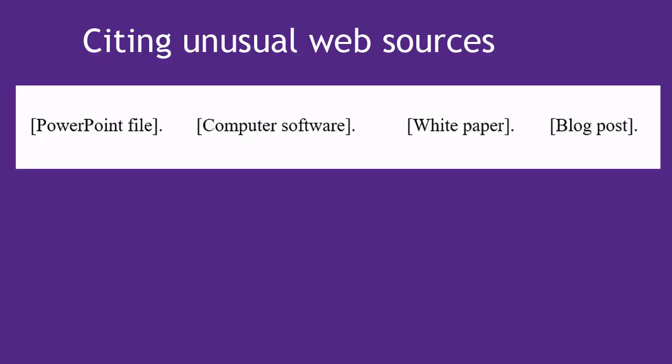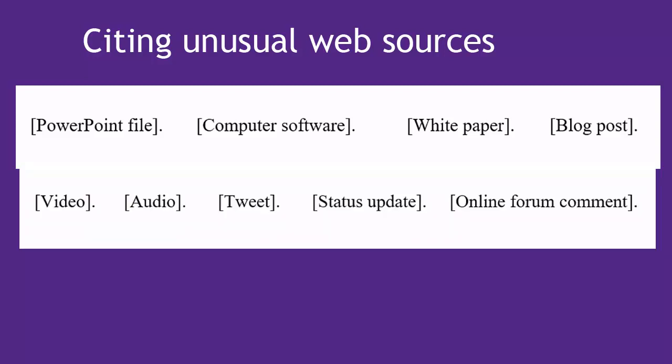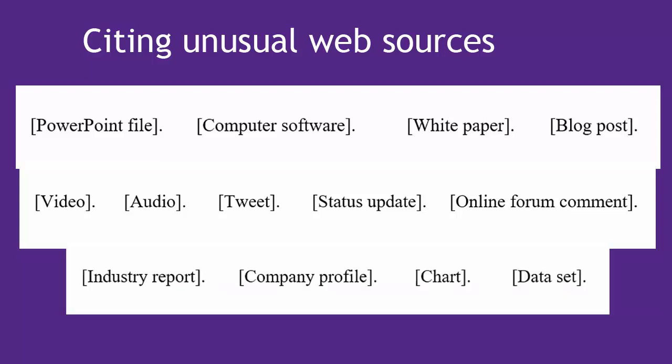APA gives examples such as: PowerPoint file, computer software, white paper, blog post, video, audio, tweet, status update, online forum comment. For business examples, we frequently use descriptive texts like industry report, company profile, chart, dataset, or others.